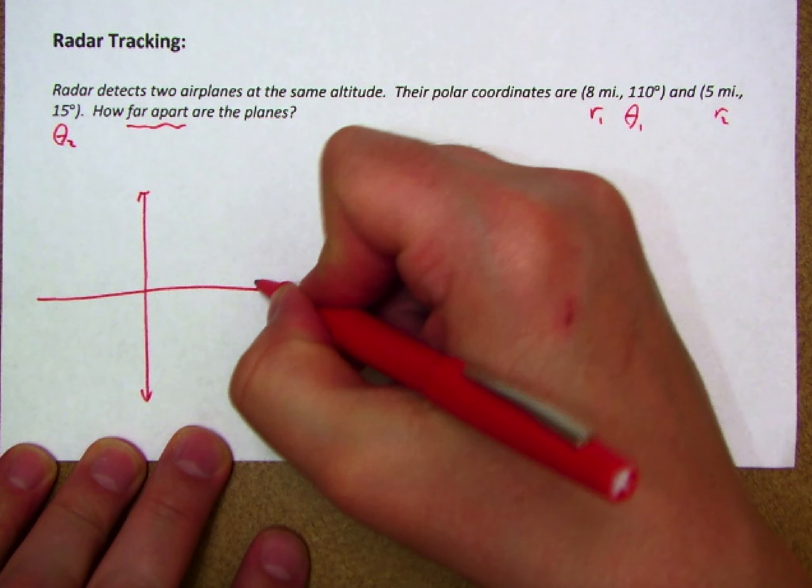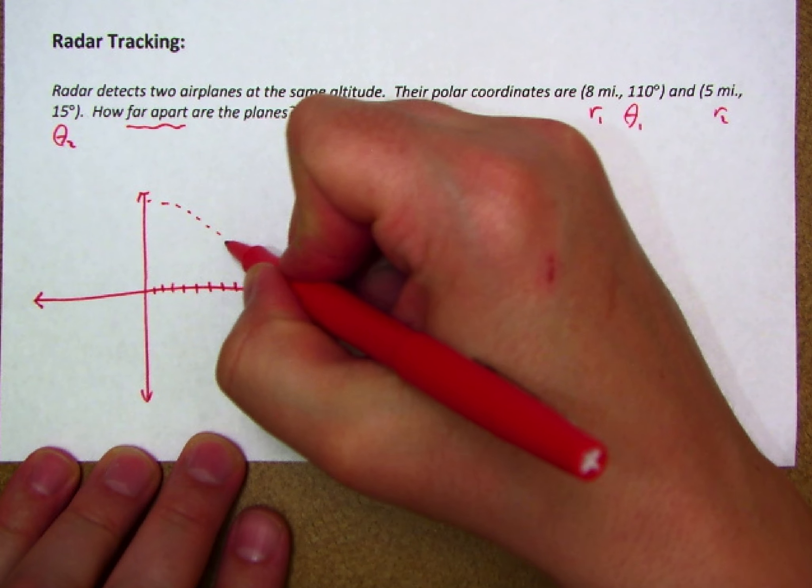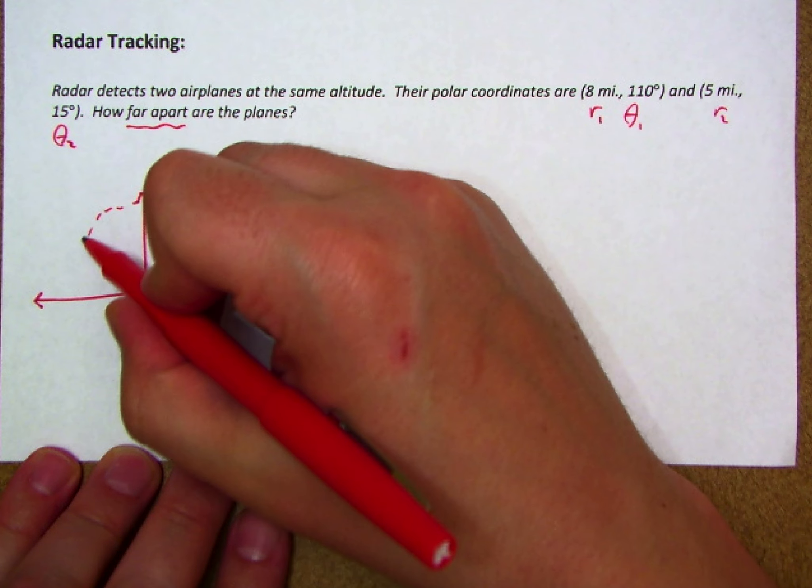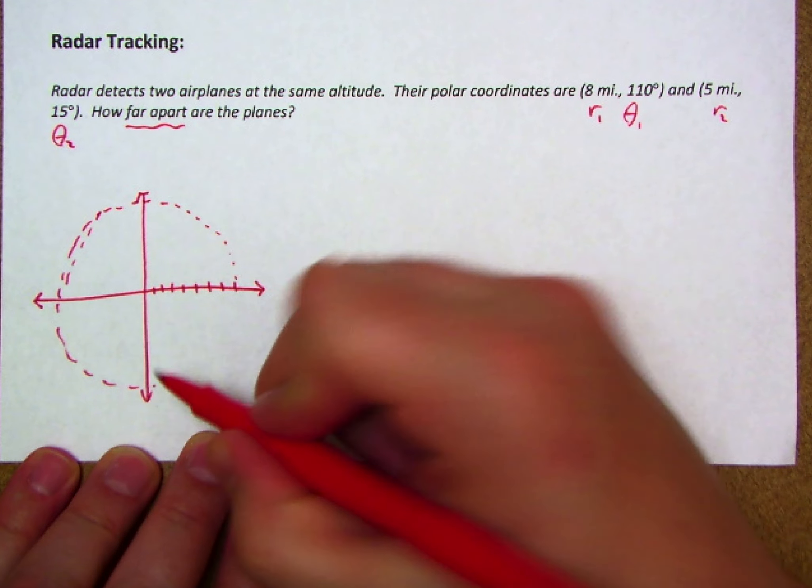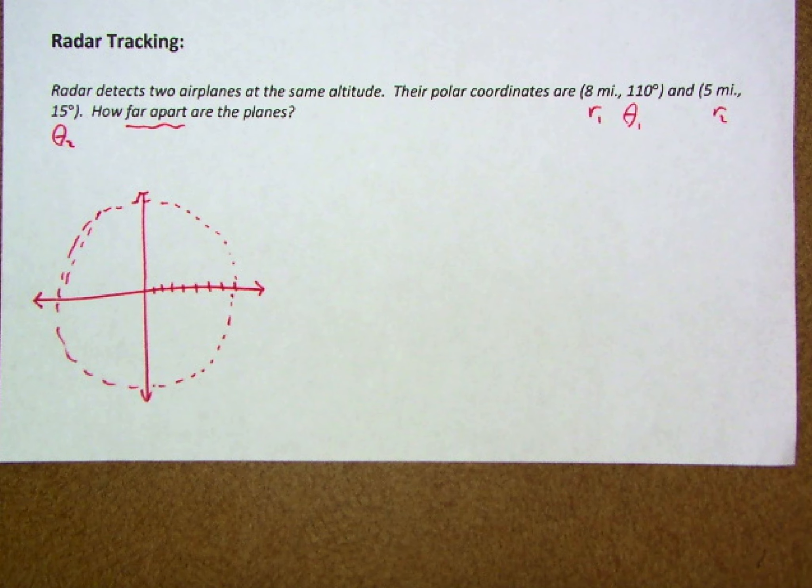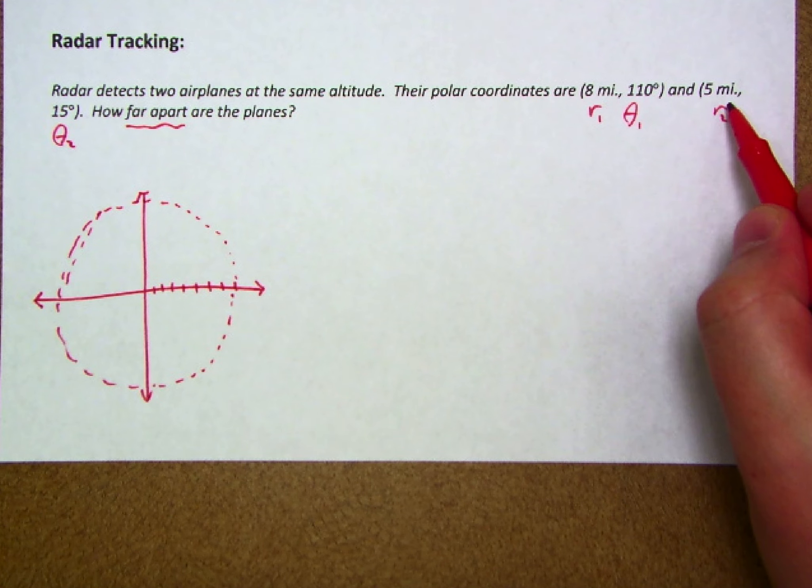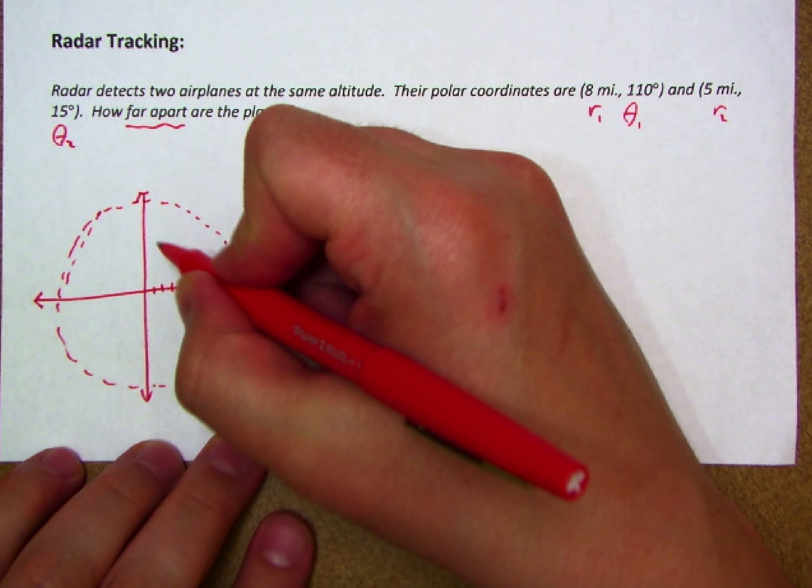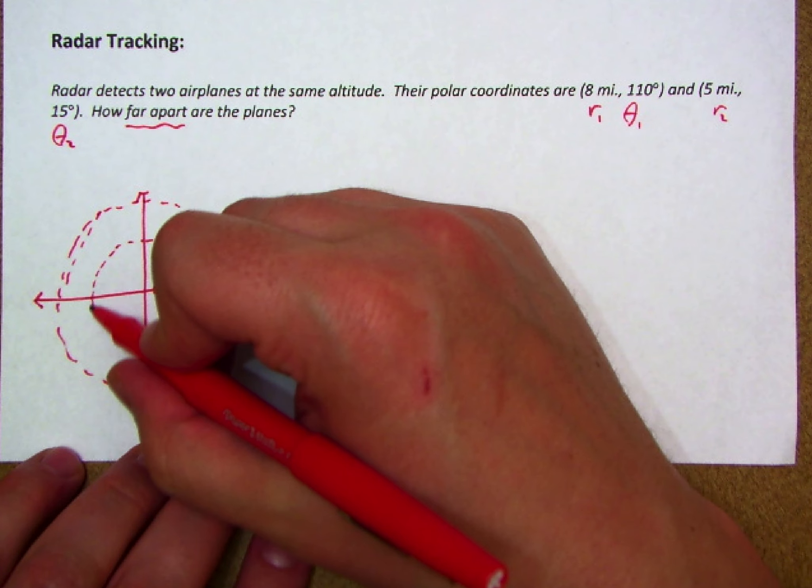In the case of 8, 110, I could go 1, 2, 3, 4, 5, 6, 7, 8. We know that we're thinking about polar coordinates as a series of concentric circles, right? So as we consider this first one, it's got a much larger radius than the second. The second just goes out to a radius of 5. And therefore, it'll look something like this.